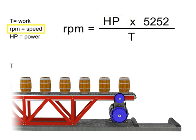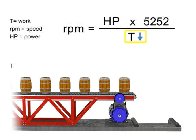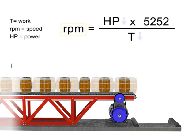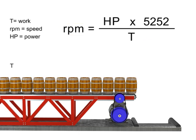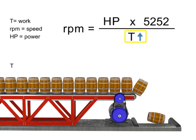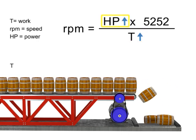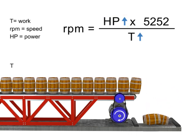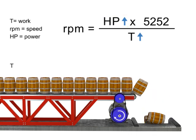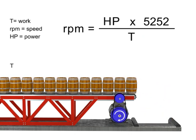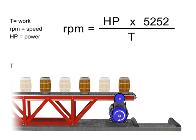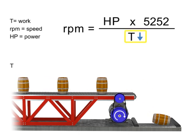If speed remains constant, then torque and horsepower are proportional. As the torque increases, horsepower also increases to maintain constant speed. As the torque decreases, horsepower also decreases to maintain constant RPM. Let's say we want production to increase but the speed of the conveyor to remain constant. If torque increases, horsepower also increases to compensate — this means a more powerful motor is needed to produce more torque at the same speed. Similarly, if we wish speed to remain constant and decrease torque, then horsepower also decreases.